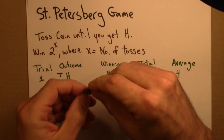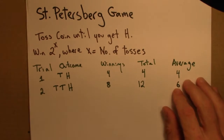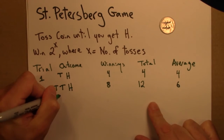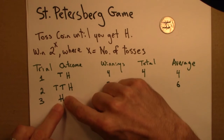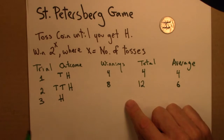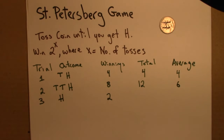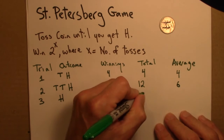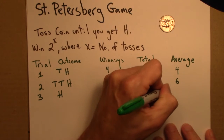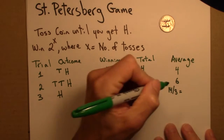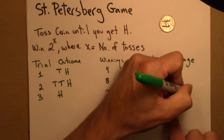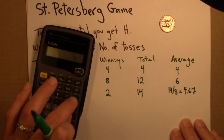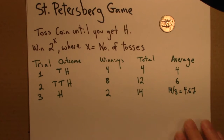Let's do one or two more games. I toss and that was an H. So this is trial 3 — I get an H right away, game is over. I did just one toss. 2 to the 1 is 2. The total winnings now is 12 plus the 2 that I just won — that's 14. And the average is going to be 14 divided by 3, which is about 4.67.